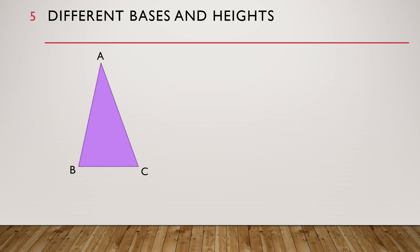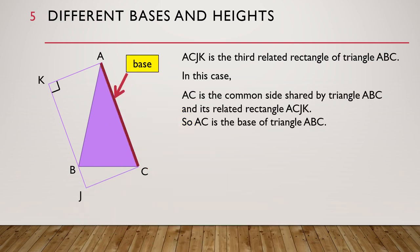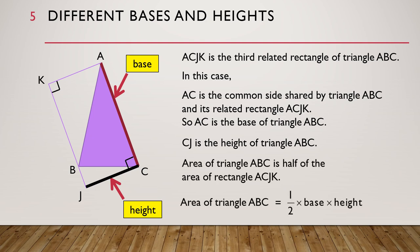Now there is a third related rectangle of triangle ABC. This new rectangle ACJK is the third related rectangle of triangle ABC. In this case, AC is the common side shared by triangle ABC and its related rectangle ACJK. So AC is the base of triangle ABC, and CJ would be the height of triangle ABC. The area of triangle ABC is half of the area of rectangle ACJK, and we have the formula: area of triangle ABC is equal to half times base times height.